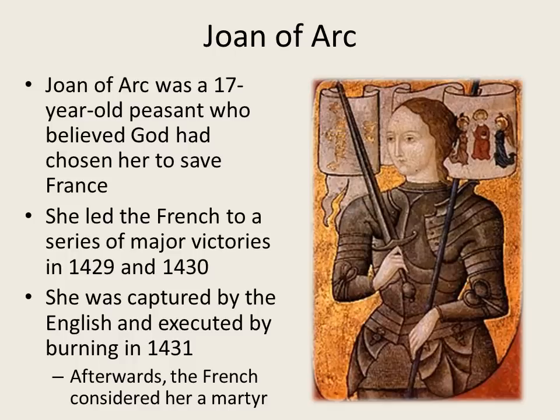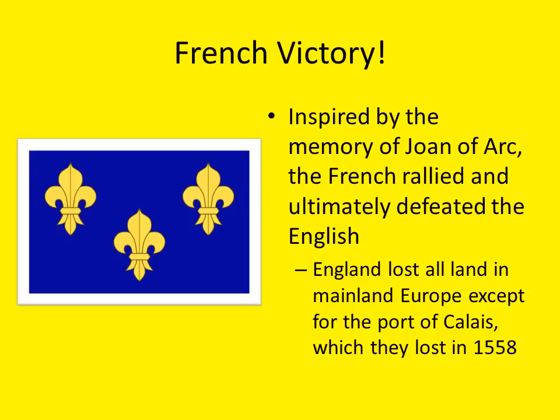England, none too pleased with being beaten, ends up capturing her in 1431. She is put on trial — they wanted to shut her up and get rid of her because she was such an inspirational figure to the French army. They put her on trial for witchcraft, she was convicted, and she was burned at the stake in 1431. But what they did in the process was create a martyr — someone who dies for a righteous cause. The French saw her as a major inspiration even after she had died, and rallied by the memory of Joan of Arc, the French ultimately defeated the English in the Hundred Years' War.